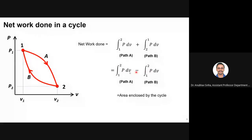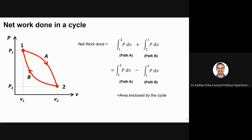If you look at these two integrands, you can see that this is the area enclosed by the cycle. The first integration gives the area under curve A from 1 to 2. Path B gives the area under its curve. We subtract the area under B from the area under A, and what remains is the hatched area enclosed inside the cycle. So the net work done in a cycle equals the area enclosed inside the cycle on the PV diagram.